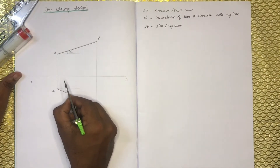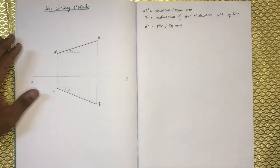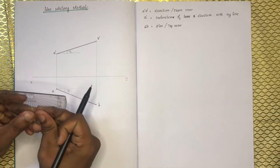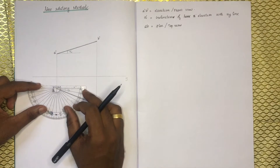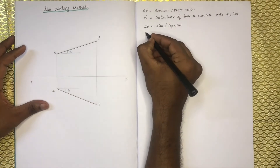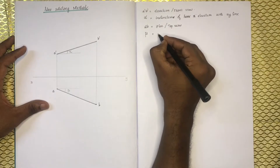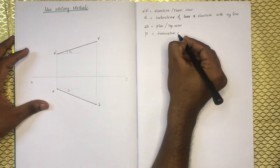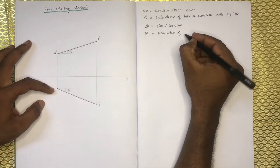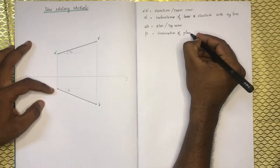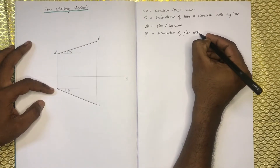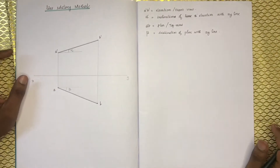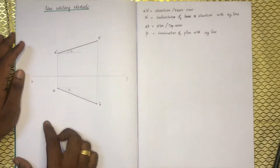Along the XY line, we use a protractor for the AB plan. The inclination of the plan with the XY line — then we will write the method of the line.